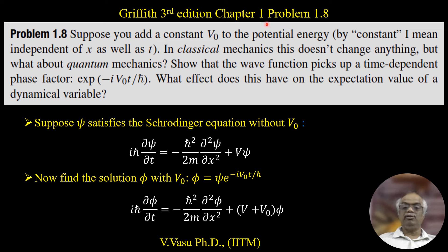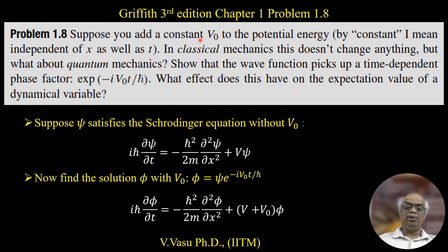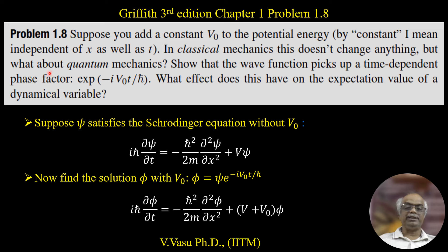Today we will solve problem 1.8 of Griffiths 3rd edition Introduction to Quantum Mechanics. The problem is: suppose you add a constant V-naught to the potential energy — by constant I mean independent of x as well as t. In classical mechanics this does not change anything, but what about quantum mechanics?